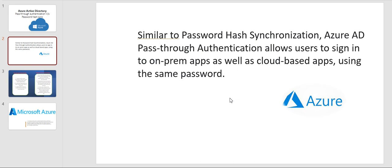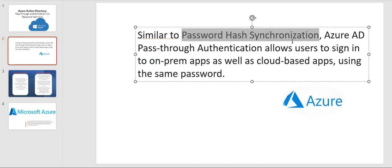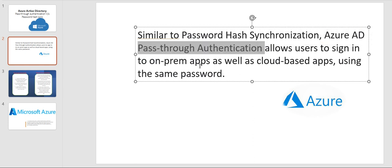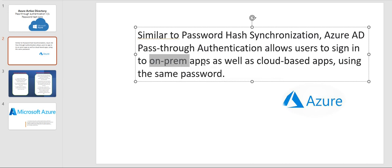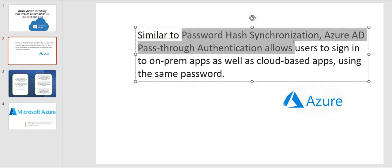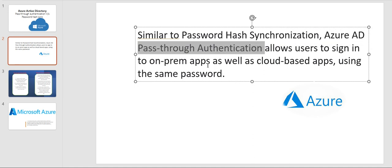Similar to password hash synchronization, Azure AD pass-through authentication allows users to sign into on-premises apps as well as cloud-based apps using the same password. This is one key similarity — both methods allow the user to sign into on-premise applications as well as cloud-based applications with the same password.